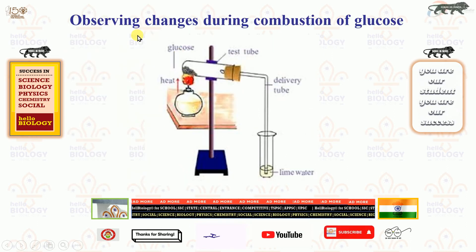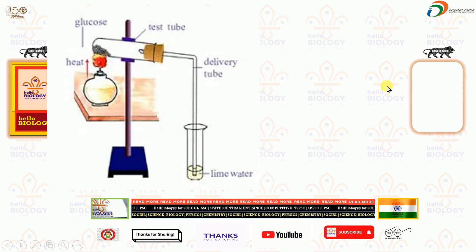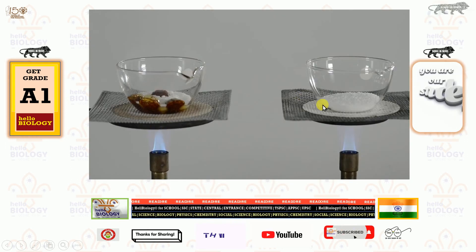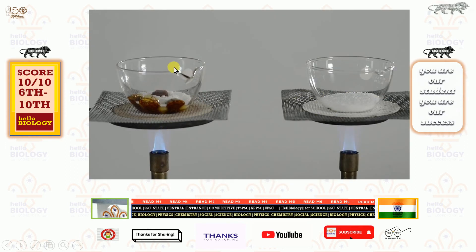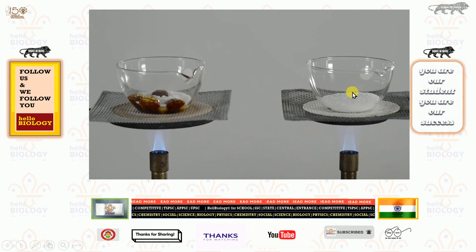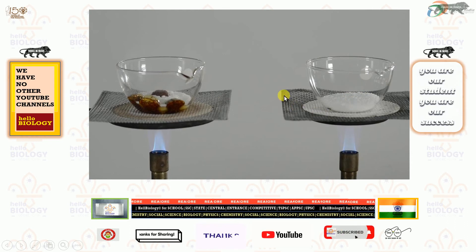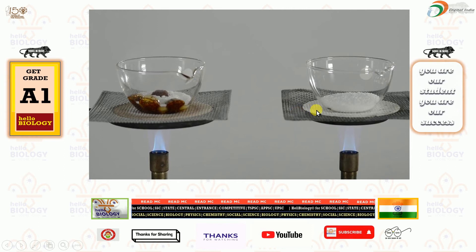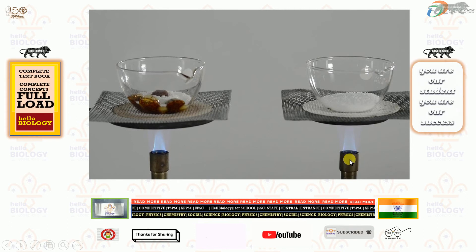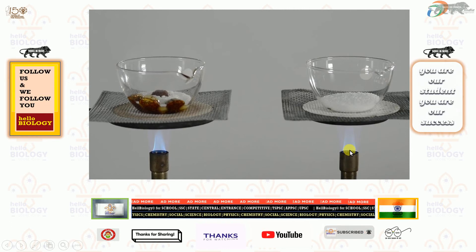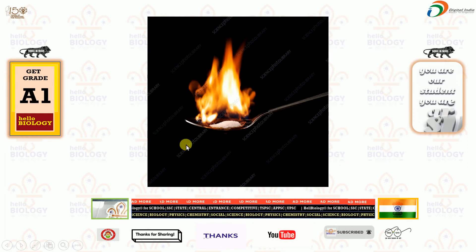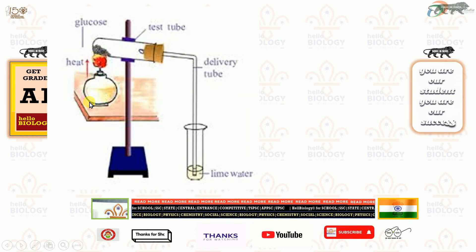We perform this in a closed environment so that only carbon dioxide is detected and no other gas enters. This is observing changes during combustion of glucose. In one image, sugar is placed in a China dish on a wire gauge with a heat-resistant diaphragm and a Bunsen burner. Note the difference: a spirit lamp is used in the main experiment, while a Bunsen burner is used here.